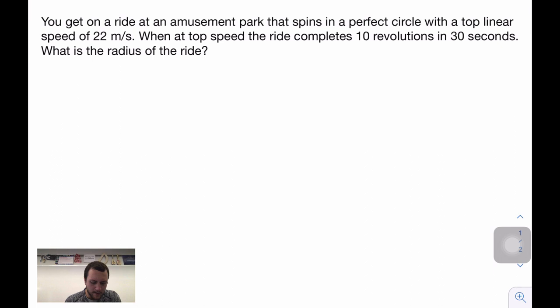So if we look at a quick example here, you get on a ride at an amusement park that spins in a perfect circle with a top linear speed of 22 meters per second. When at top speed, the ride completes 10 revolutions in 30 seconds. What is the radius of the ride? Information that we know right away. We know that this is a perfectly circular ride. So we're going to get our circle. And we know that this thing completes 10 revolutions in 30 seconds, and we know its top linear speed is 22 meters per second.